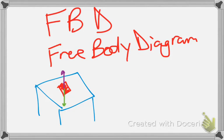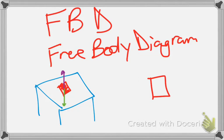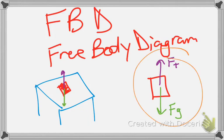So what would a Free Body Diagram look like? Simplified view — there's the book. Gravity pulls down; we say that's the force of gravity. And then the table pushes up — there is the force from the table, also known as the normal force. This right here is a Free Body Diagram: the book is experiencing two different forces, the force of gravity and the force from the table. That's exactly what a Free Body Diagram is.